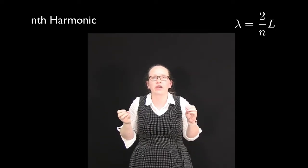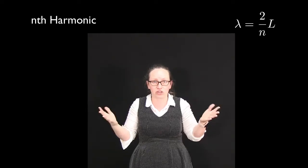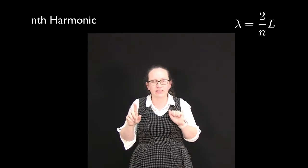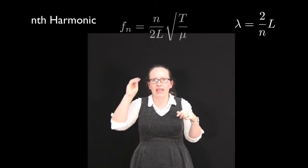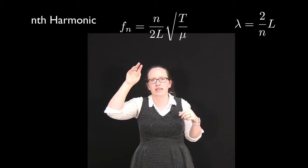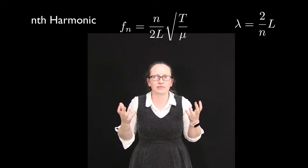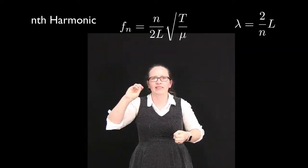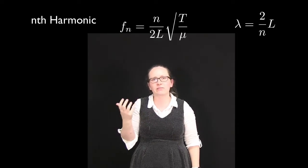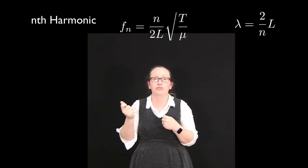Now we can use this to work out the frequencies of these standing waves that are allowed on this piece of string. We can show that the frequency is equal to n divided by 2L times the square root of T over μ. What's nice about this relationship is that factor of n, which tells us that for the nth harmonic, the harmonic frequency is equal to n times the fundamental frequency.